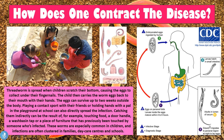Once the embryonated eggs are ingested, we have the larvae — the actual worm stage — in the small intestine. These larvae then develop into adults in the lumen of the cecum, which is the first part of the large intestine. The female worms are slightly larger than the male worms. Finally, the gravid female migrates to the perianal region at night to lay her eggs around the anus. This egg-laying process causes the itchiness and is what drives the spread of the disease.